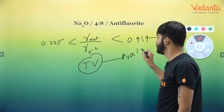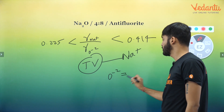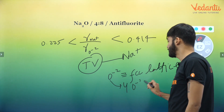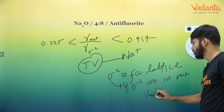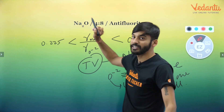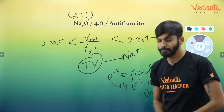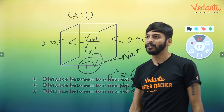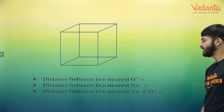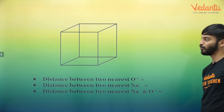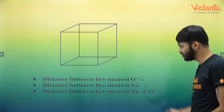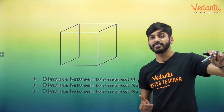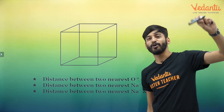Na⁺ will fill the tetrahedral void and O²⁻ will form the FCC lattice. There will be 4 O²⁻ ions in one unit cell. The ratio is 2:1. Your homework is to tell me: what is the nearest distance between O²⁻ and Na⁺, and between Na⁺ and O²⁻? If you can solve it properly, you will be able to answer all of these. I will personally check the comments.